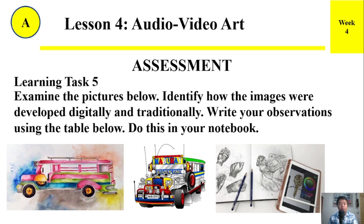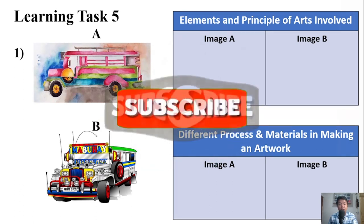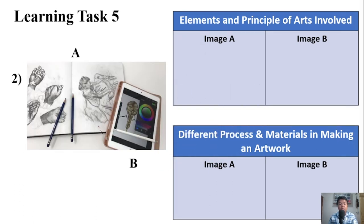Assessment — Learning Task Number 5. Examine the pictures below. Identify how the images were developed digitally and traditionally. Write your observations using the table below. Do this in your notebook. For Number 1, we have Image A and Image B. Identify the elements and principles of art involved for Image A and B, and the different processes and materials in making an artwork.